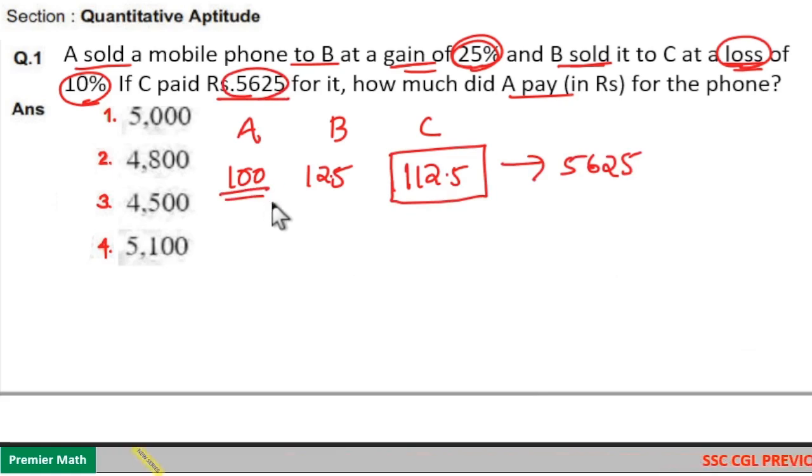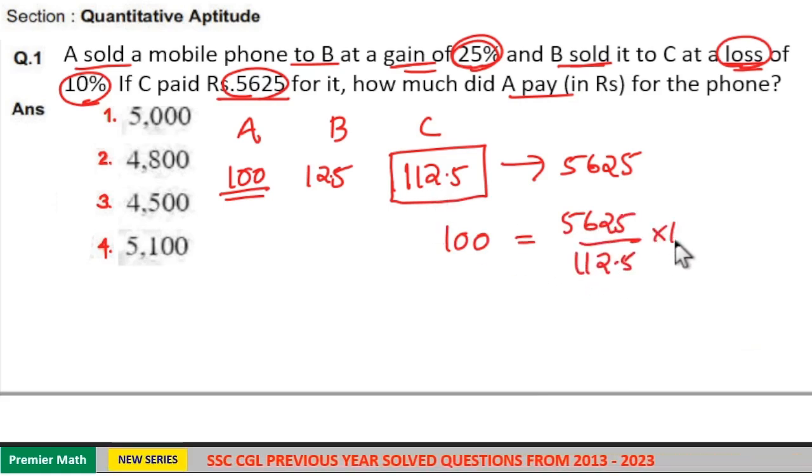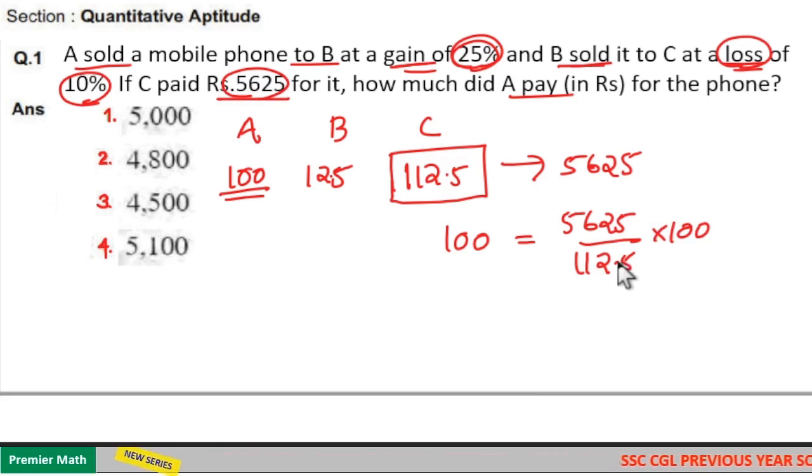Now we need to find out what is 100 rupees. So here 100 rupees is equal to 5625 divided by 112.5 into 100. Now to remove this point, I will multiply 100 with 10.